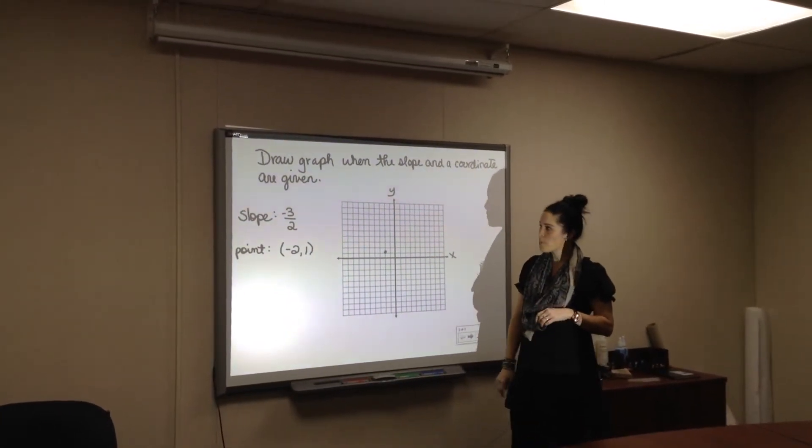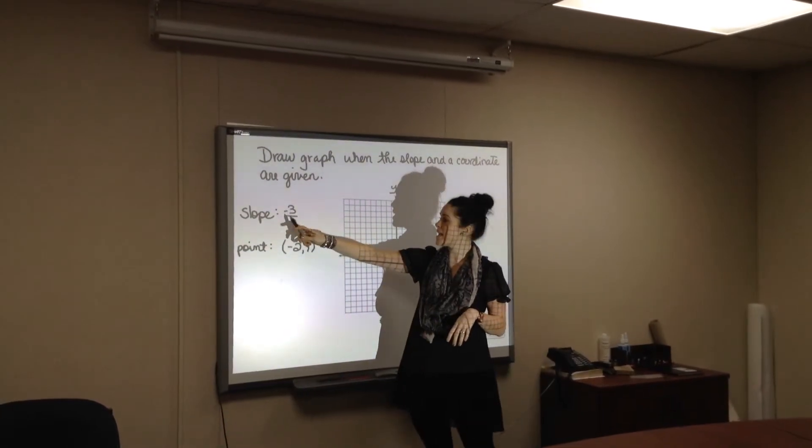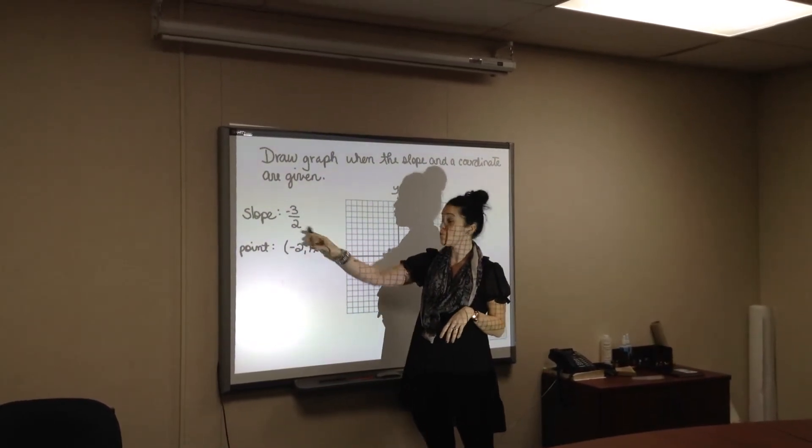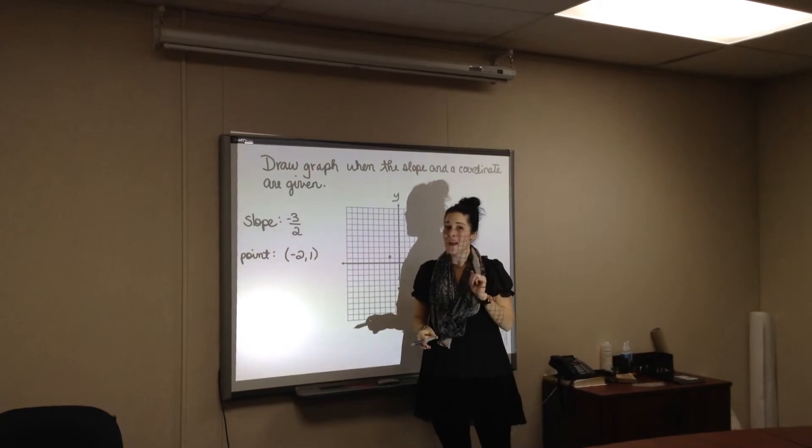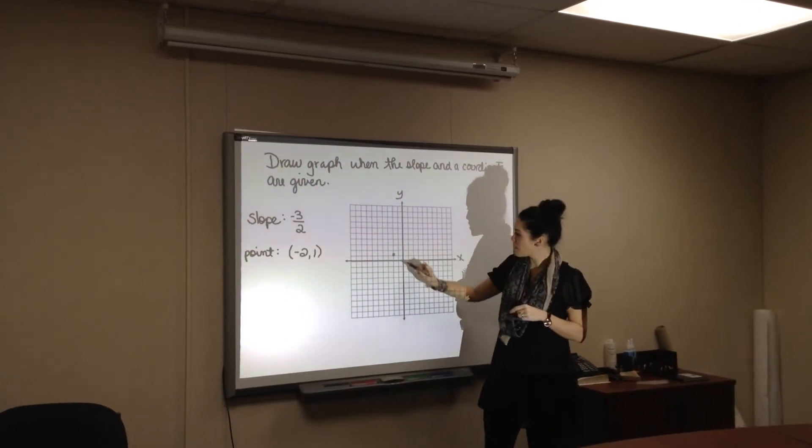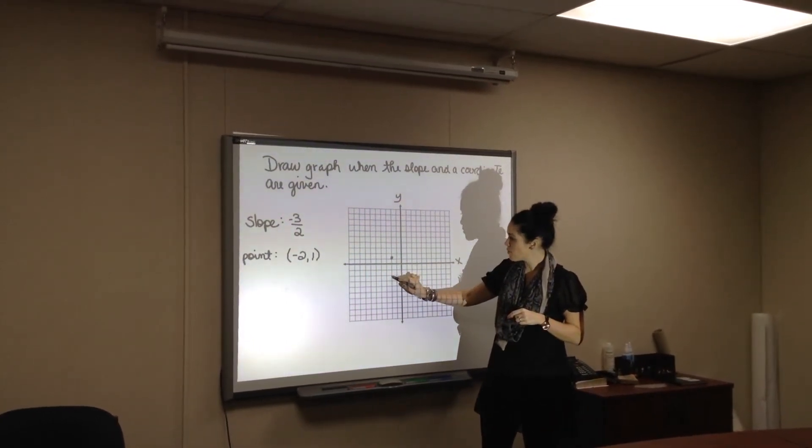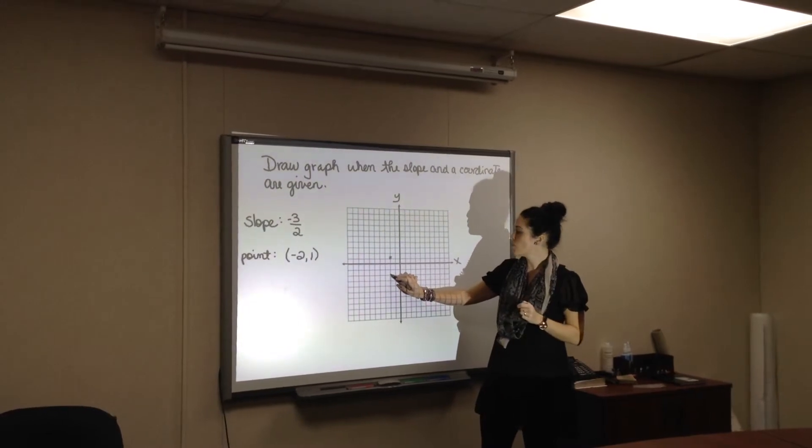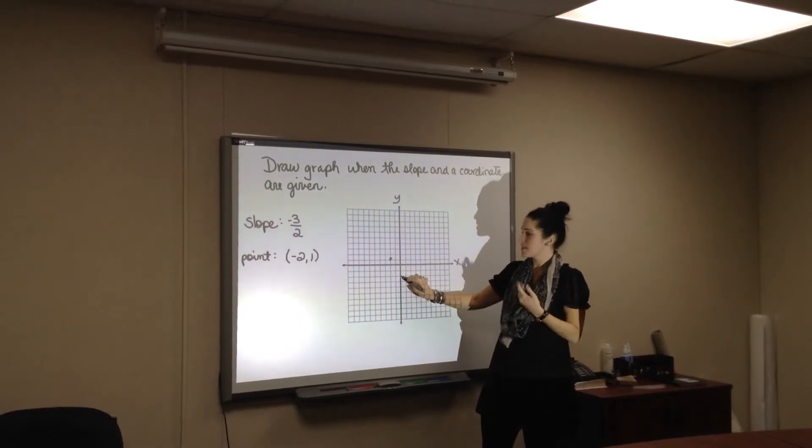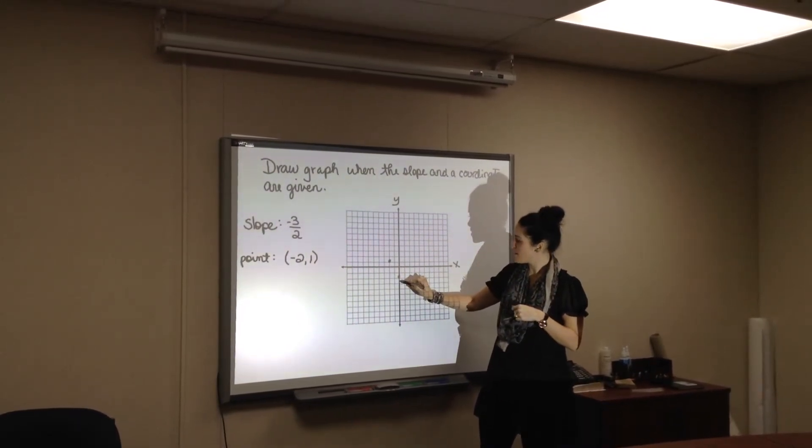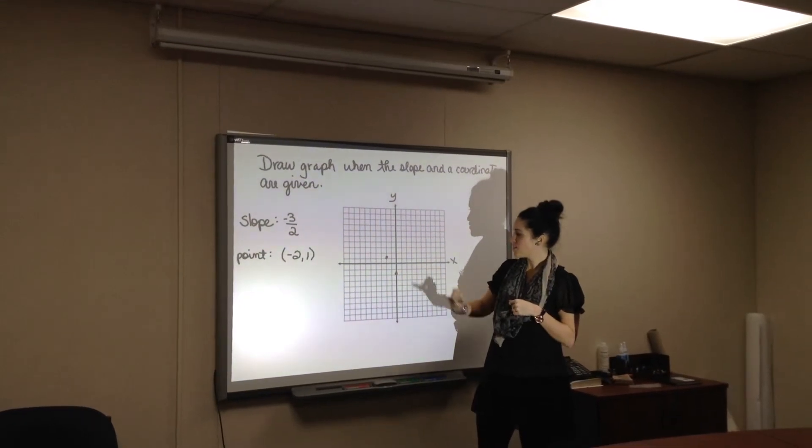And then you have the slope. If you remember, slope is rise over run, and so your rise is minus three, meaning you need to go down three, so one, two, and three, you're here. And then two, one, two, going to the right side because it's positive. So your next coordinate is right here.